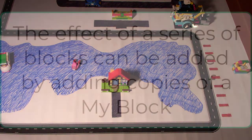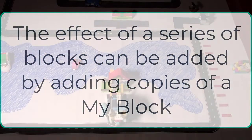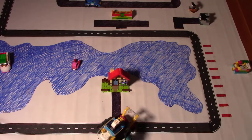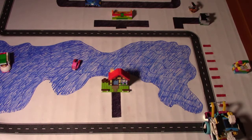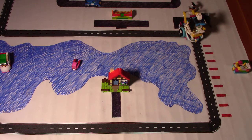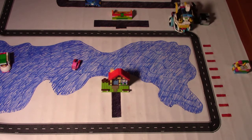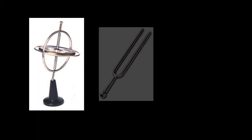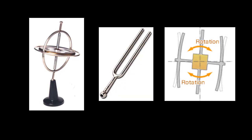Creating a my block to handle turning allowed us to add more turns simply by adding more copies of the my block. Chariot made the turns we wanted, but they weren't as precise as we'd want in a competition where every point counts. Next time we'll use the gyro to improve the turn my block and help Eaglet deliver food to the animal shelter.